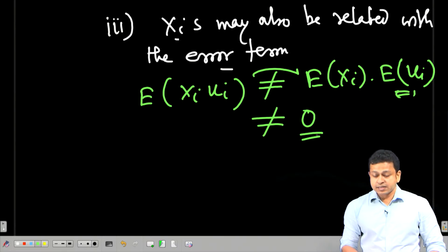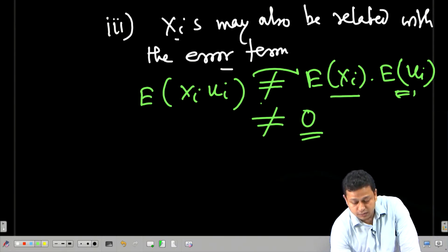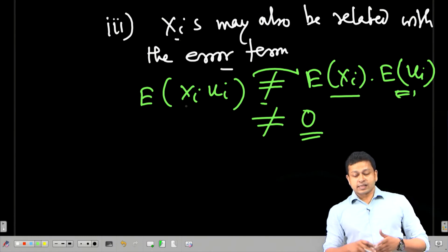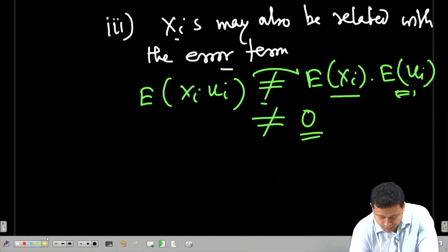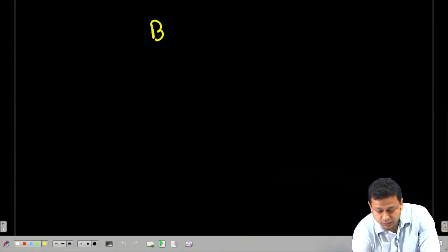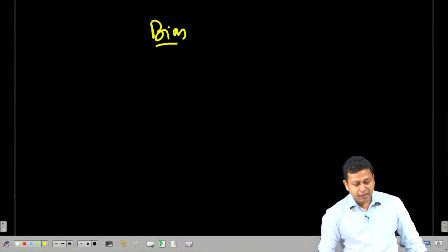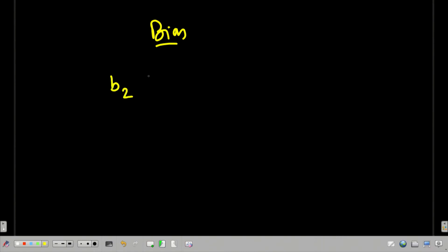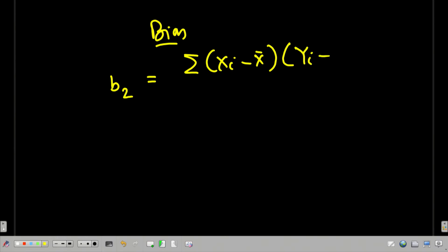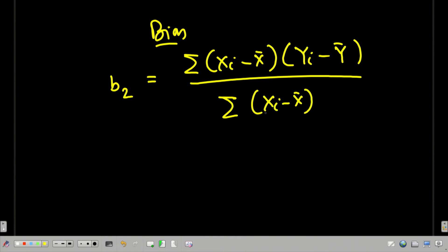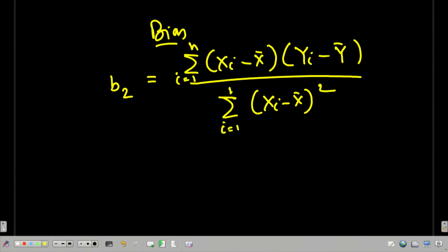Because xi and the error term are co-varying, the bias is going to exist. Let me derive the bias term. By definition, b2 — the estimated regression coefficient — equals the summation of (xi minus x-bar) times (yi minus y-bar) divided by the summation of (xi minus x-bar) squared, where i equals 1 to n.